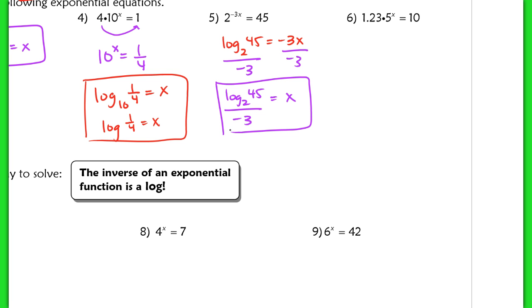In number 6, I want to first isolate the x as much as possible. So I would get rid of this 1.23 first. I have 5^x equals 10 divided by 1.23.